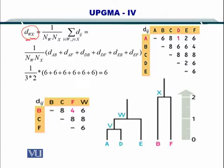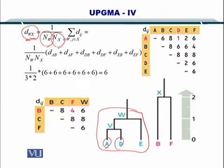you remember the formula that the number of sequences in W multiplied by the number of sequences in X. So how many sequences we have in W? So this is the W cluster. We have A, D and E.